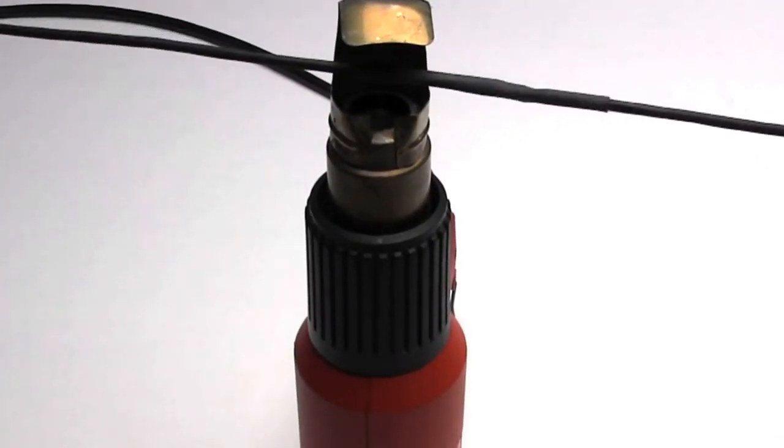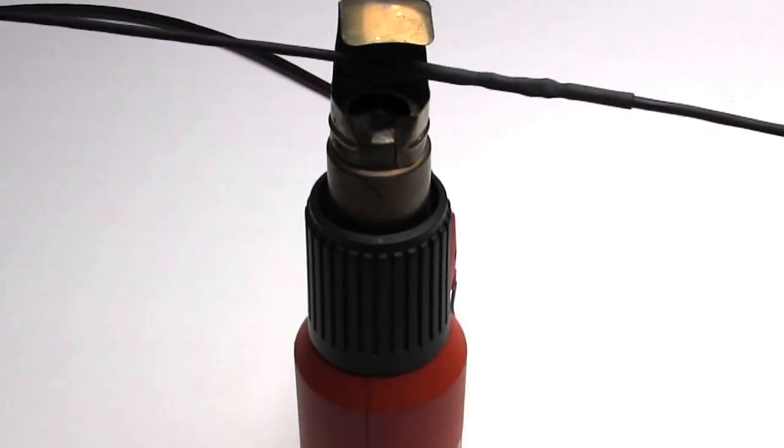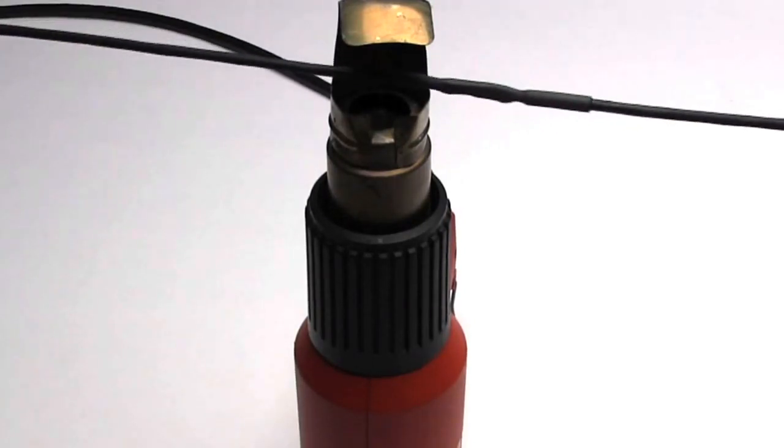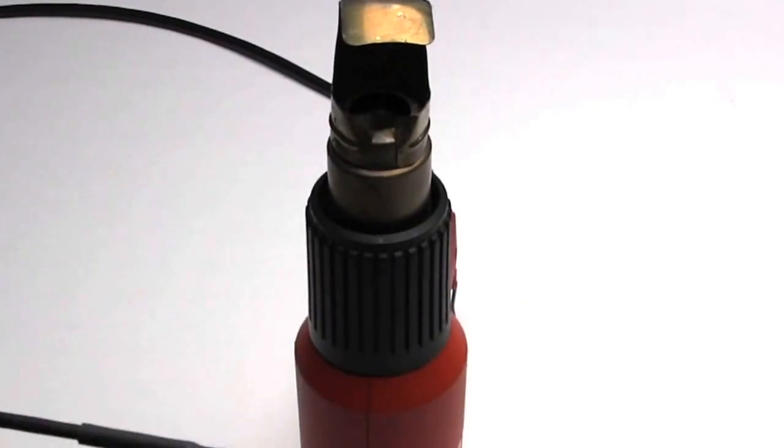Use the heat gun and notice the heat shrink forming tightly to the cable and splice. The adhesive lined heat shrink will have a glossy look once the glue is flowed. Be careful not to overheat the heat shrink. If overheated, it will start to warp and eventually melt away. Allow all the parts to cool before moving.